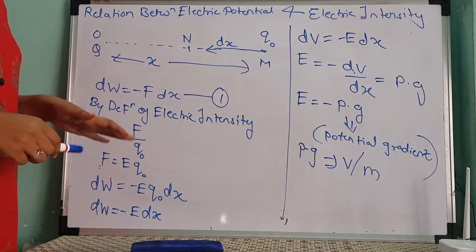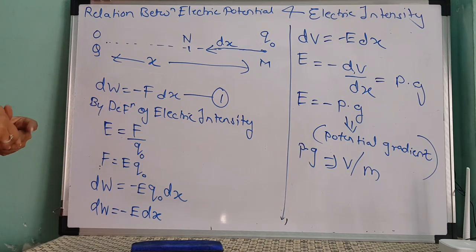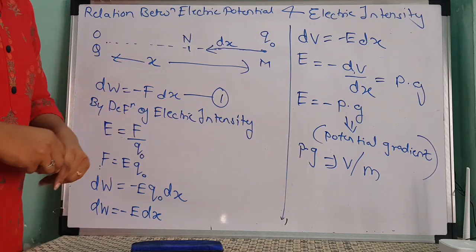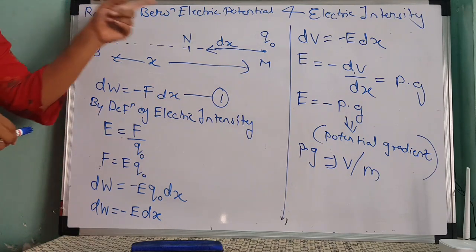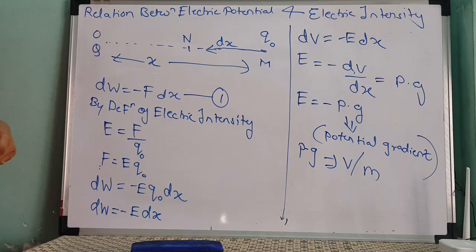I hope this is very clear. This is the simplest relation between electric potential and electric intensity. Thank you.